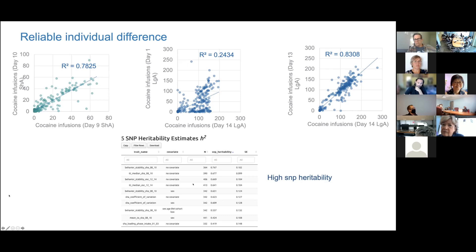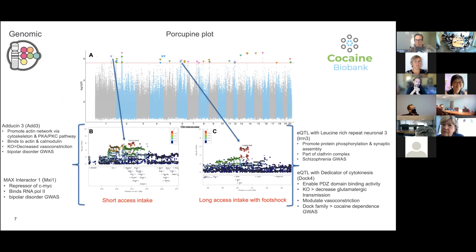Interestingly, the behavioral measures that look at the overall behavioral response during the session have much lower SNP heritability than the behavioral measures within the session - in terms of inter-trial interval and how behaviors are distributed between the early and late phase of the session. We think there are some behavioral motifs that may be more linked to the genetic mechanism than the overall view of output. Here is a porcupine plot.